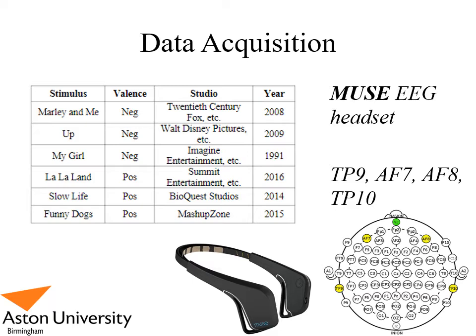Using a Muse EEG headband with four electrodes — TP9, AF7, AF8, and TP10 — EEG data was recorded from subjects whilst exposed to the stimuli in the table to the left.